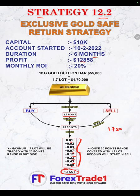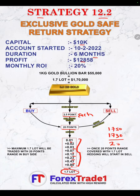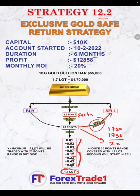Each entry point gap will be a maximum of 2.5 points, and up to 20 entries it will take on the buy side. So with 2.5-point entry gaps, the maximum range it will cover is from 1750 to approximately 1773 — that is 20 points of range. The maximum 1.7 lots will be traded on the buy side, and profit will be booked within that. Once the 20-point range is covered with 1.7 lots, the hedge cycle will start on the sell side.